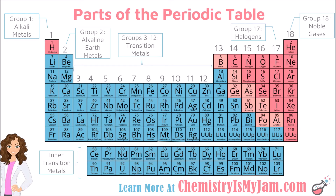You should be aware of where the inner transition metals fit into the table. If you follow the numbers 55, 56, 57 — 58 is down here through 71, and then it comes back up. The inner transition metals actually fit into this space here. However, we put them below the table for convenience to make the table easier to print.